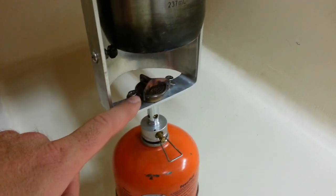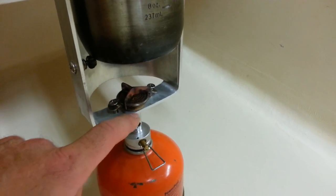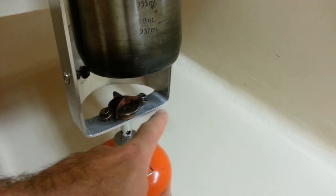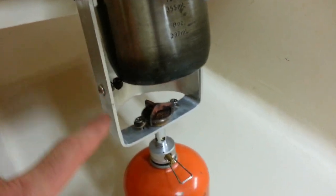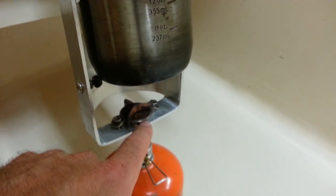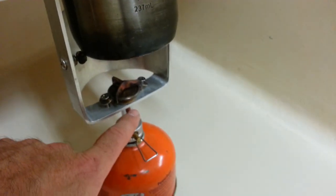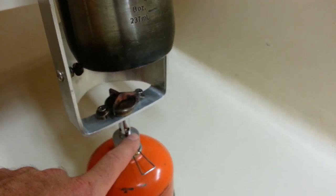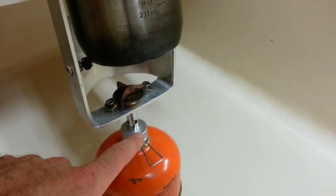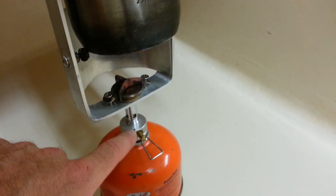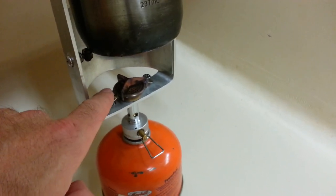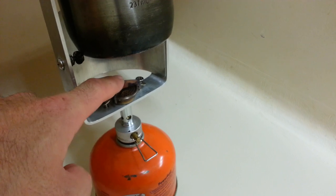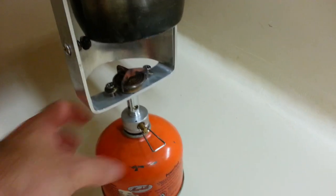This is the MSR pocket rocket stove. I just, this is a frame made out of aluminum flat bar eighth inch thick that I just hand bent to shape. I drilled a hole big enough to pass the flame tube through here. That unscrews from the base. So I unscrewed it and stuck it through the hole and screwed it back in and then I'm using a couple of screws here to just hold the burner head stable so it can't wobble around in there.